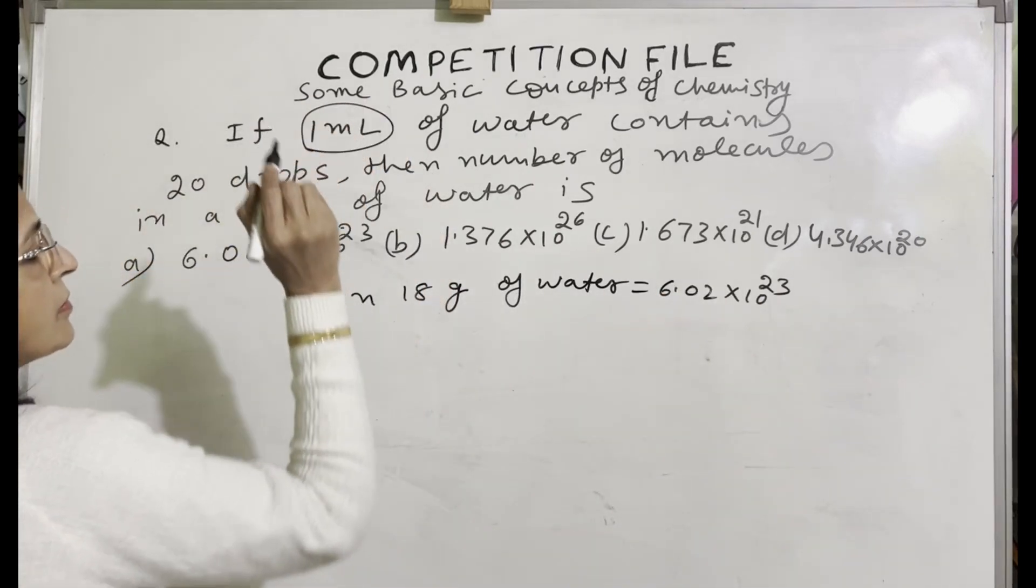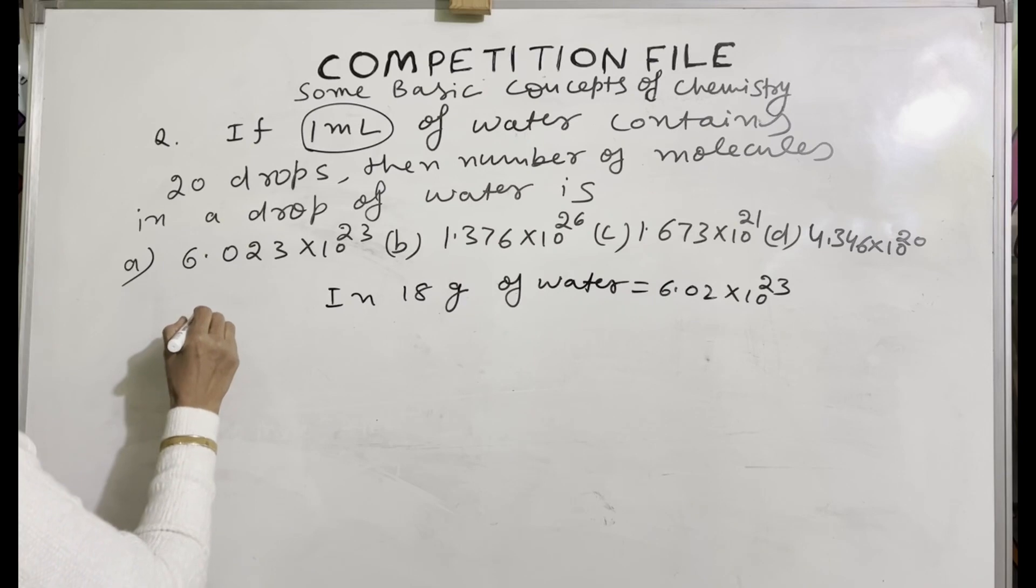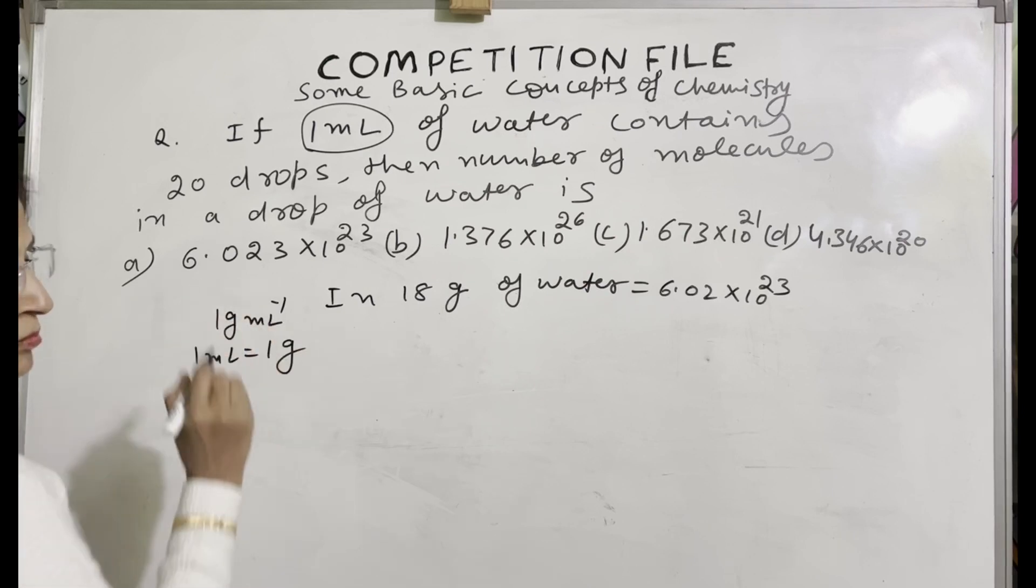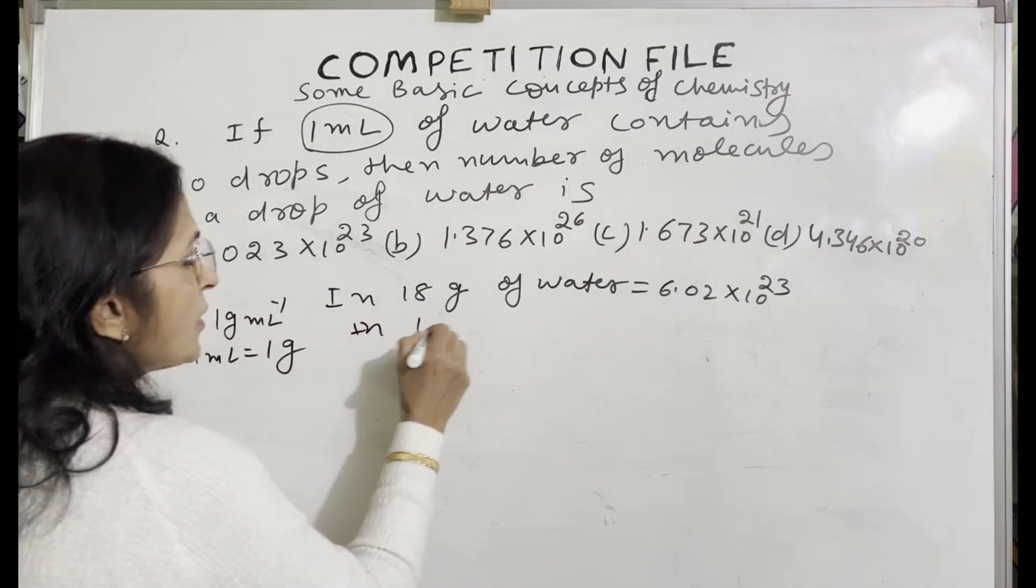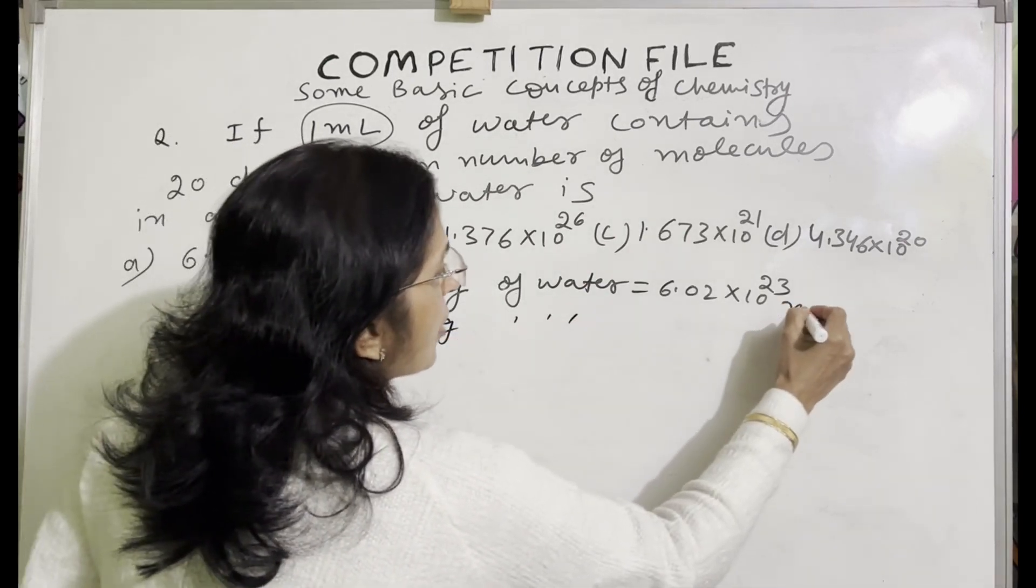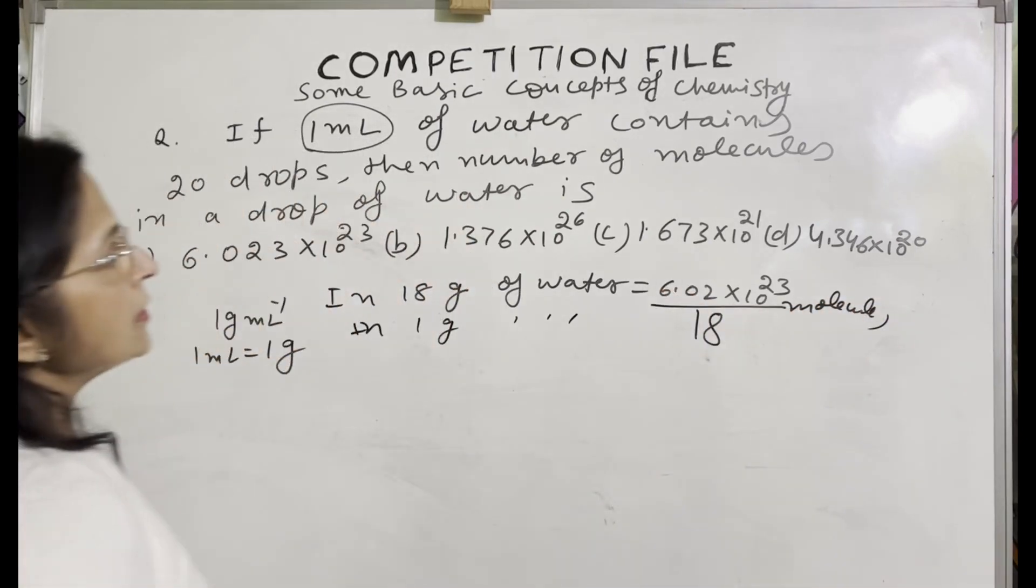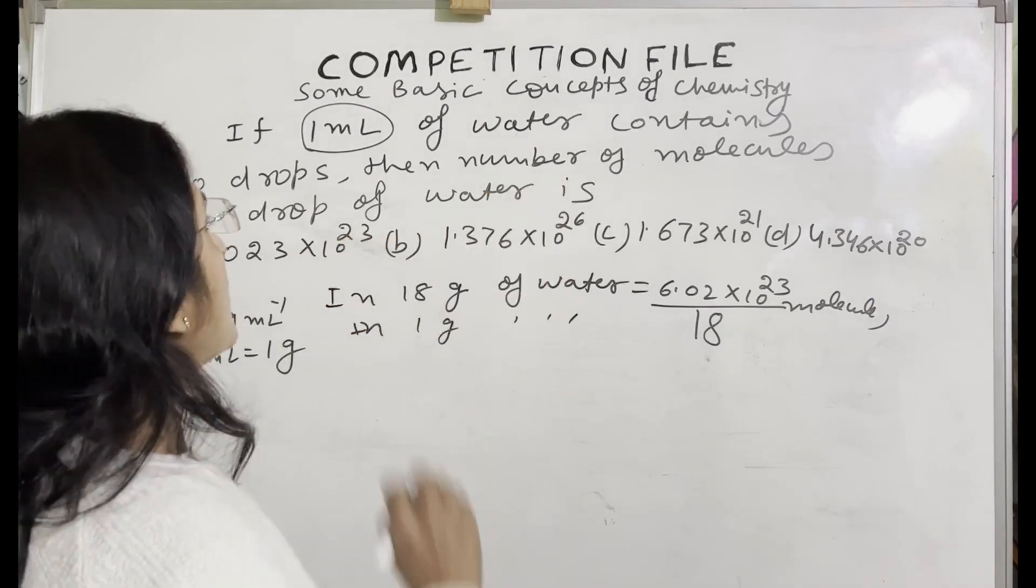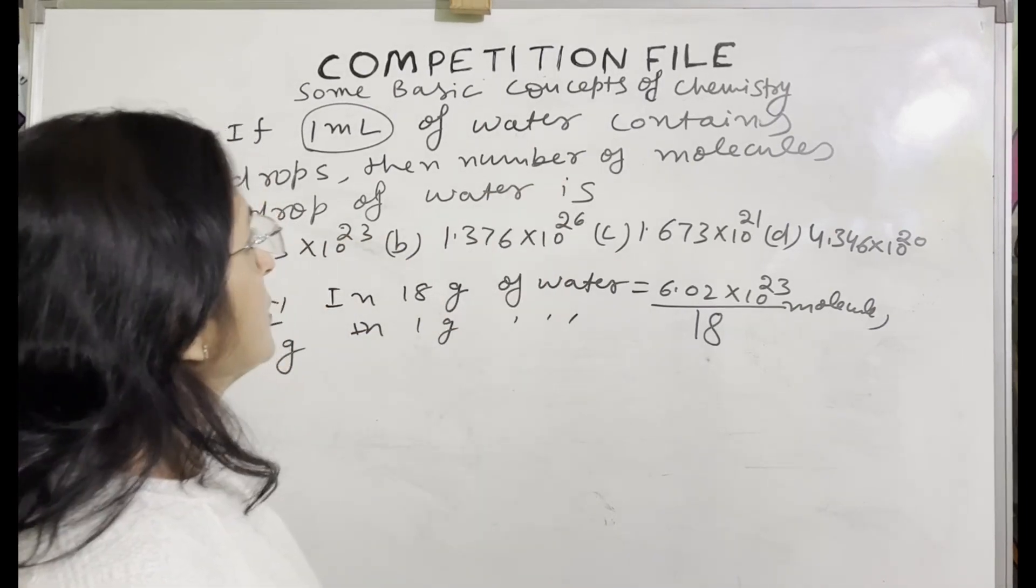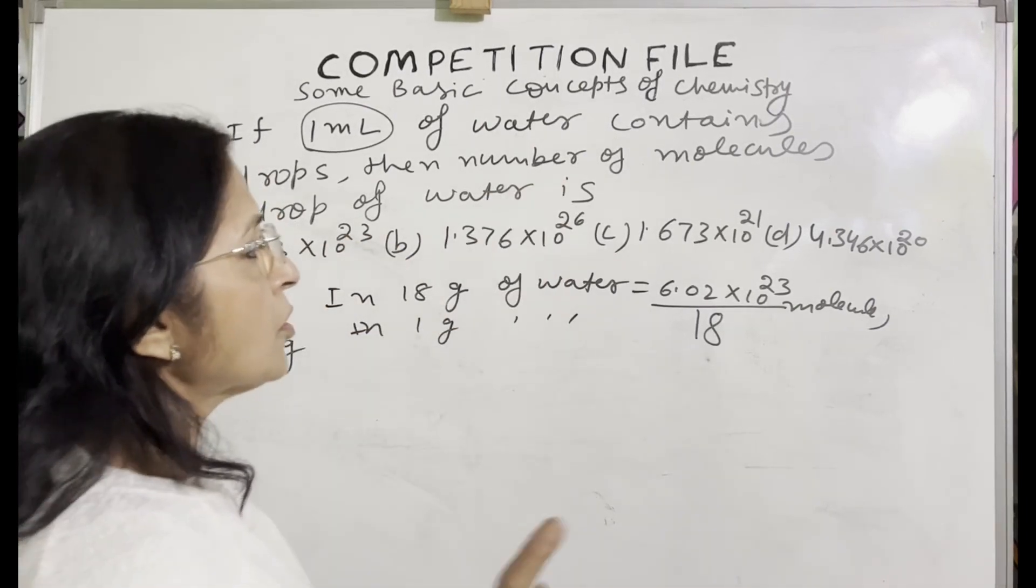So we are given 1 ml. The density of water is 1 gram per ml. So 1 ml is equal to 1 gram. So in 1 gram of water, how many molecules will be present? Avogadro number divided by 18. In 1 gram of water, 20 drops are present. So number of molecules in 1 drop of water, what will you do?